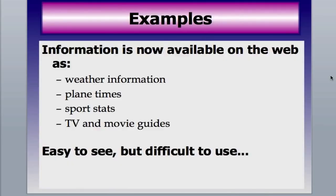Here are some examples of where the semantic web will really be seen right away. Right now, we have information available on the web — weather reports, flight times, departure and arrival, sports stats, TV and movie guides. All this information is on the web and it's very easy to see, but it's very difficult to use. If you go to a sports stat page and try to scrape off the information, you'll find it's exceptionally difficult to get the data you want so you can utilize it in a different form.